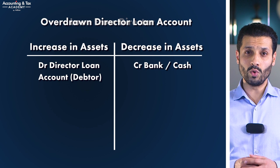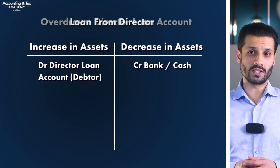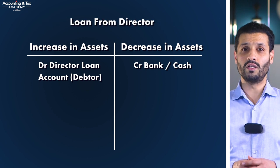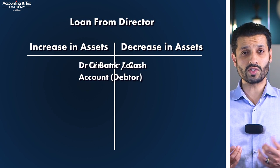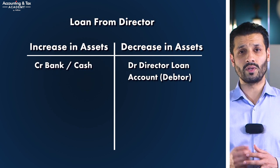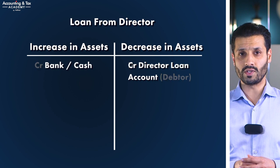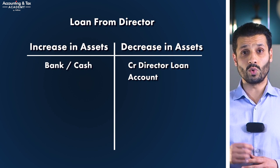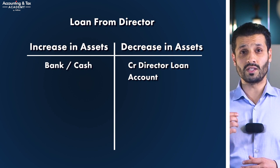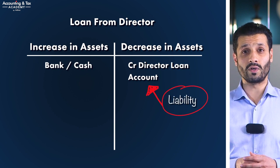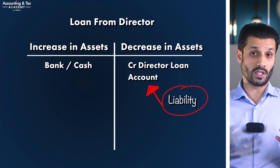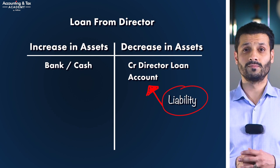When it comes to a loan from director, the entries are literally reversed and the director loan account becomes a creditor account. In other words, your company has a liability to pay you, the director, who becomes a creditor.